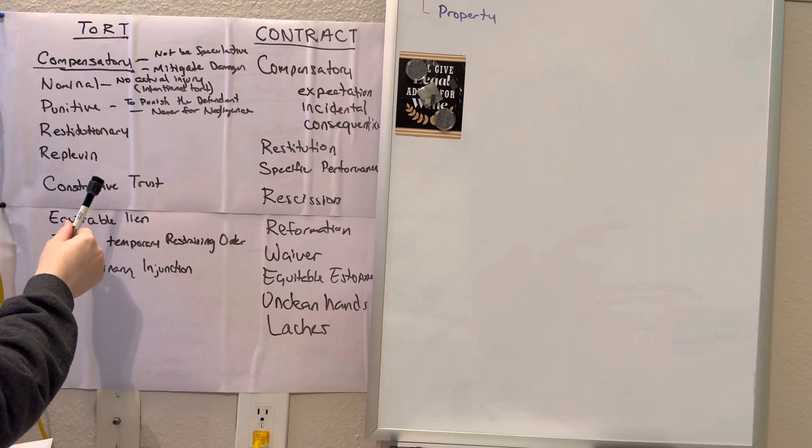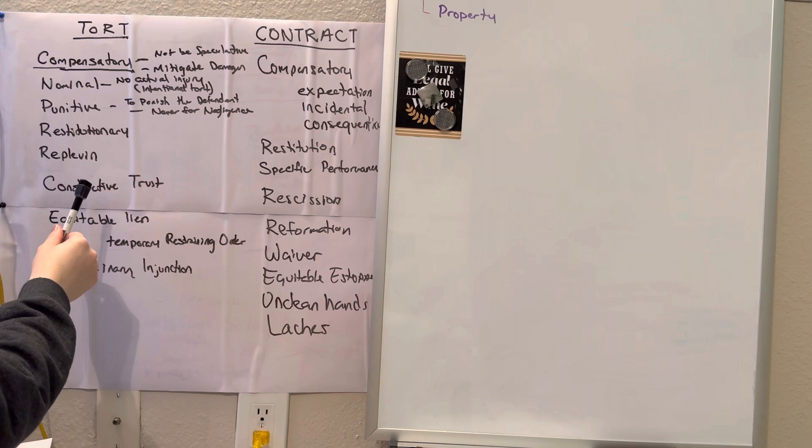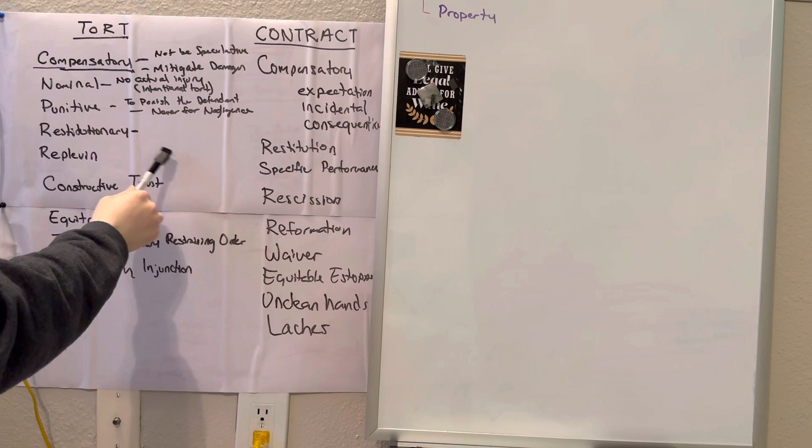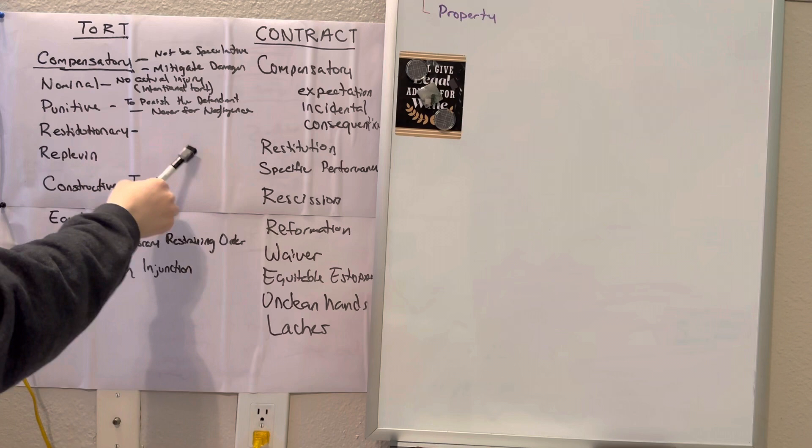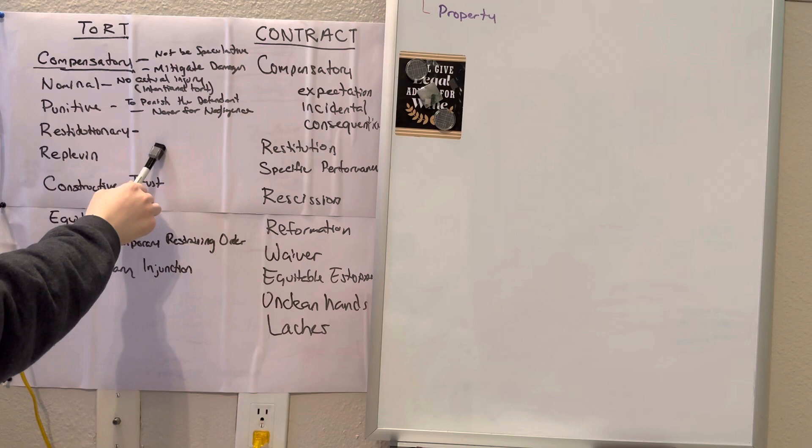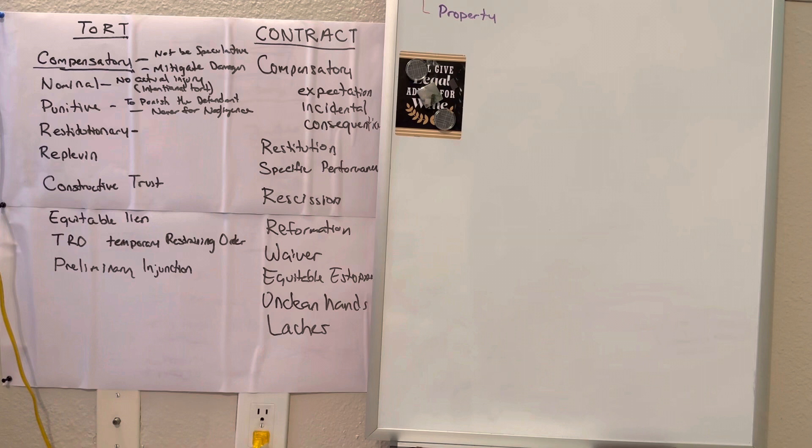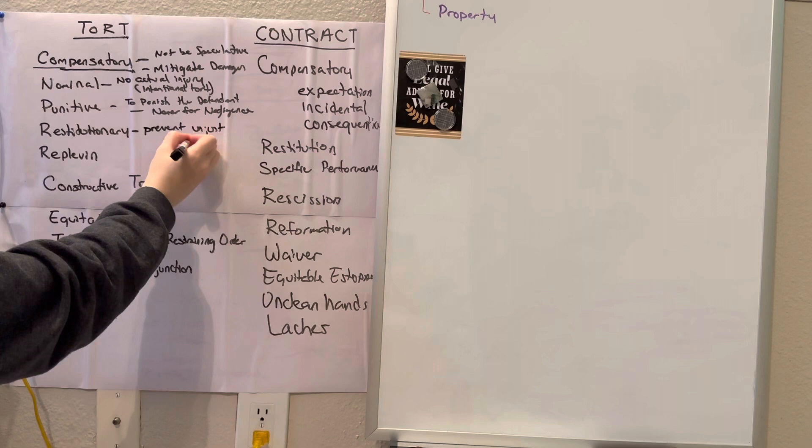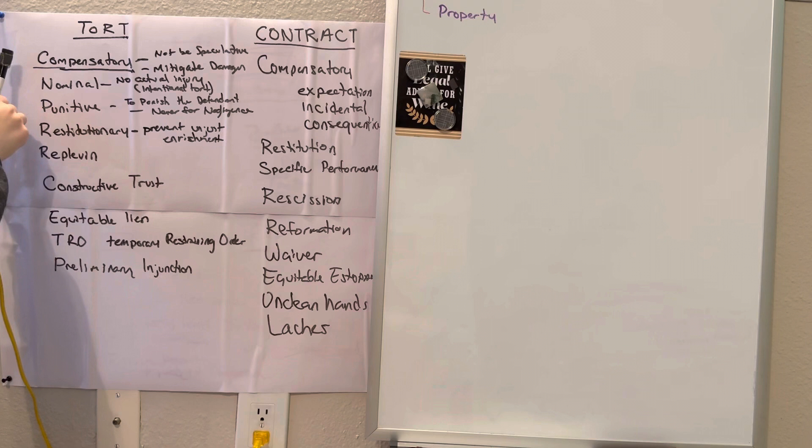Restitution. The goal of restitutionary damages is to avoid unjust enrichment of the defendant. This means the plaintiff recovers the value of the benefit conferred on the defendant. An example of this is in a trust: if the trustee mismanages the trust fund by taking $40,000 and investing that $40,000 and earning a profit, let's say going away with $100,000, the beneficiaries can seek restitutionary damages against that trustee for the entire $100,000. Why? Because the court wants to prevent unjust enrichment.